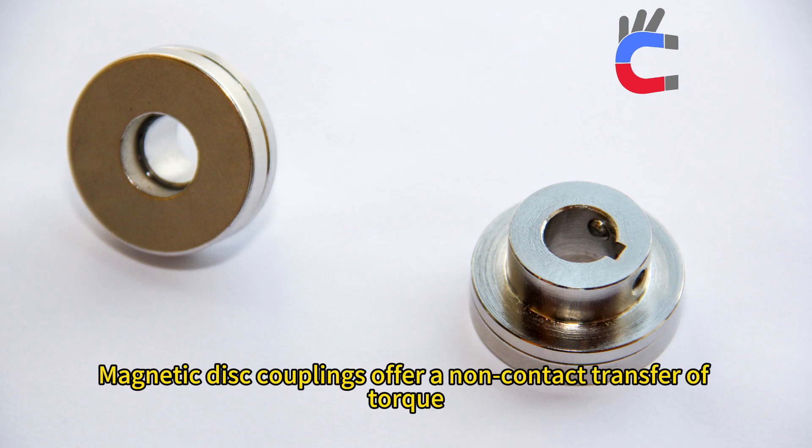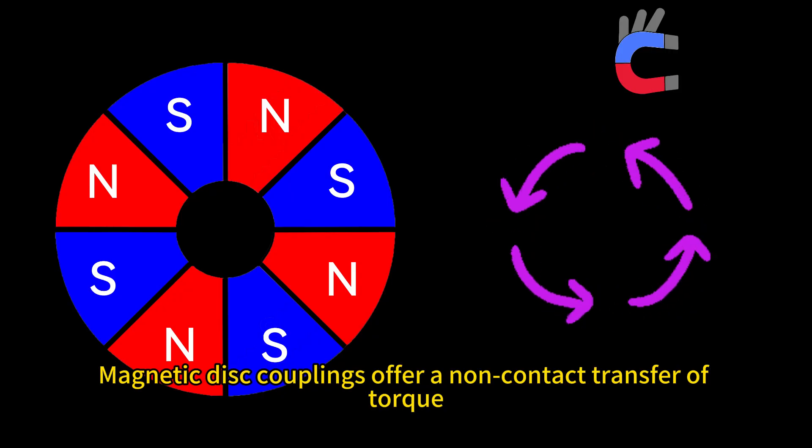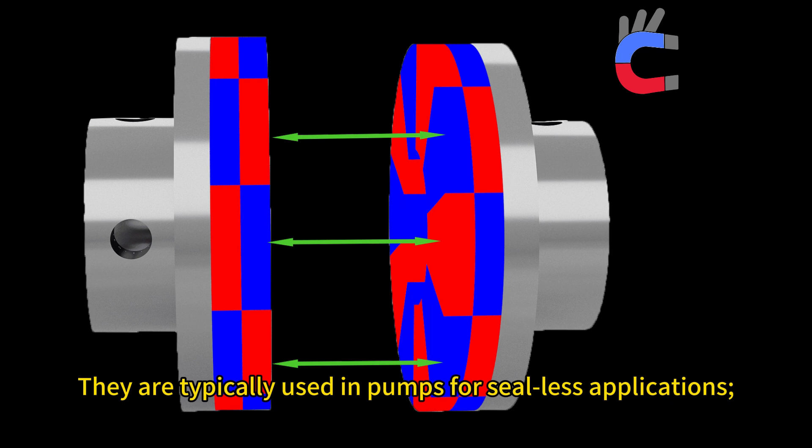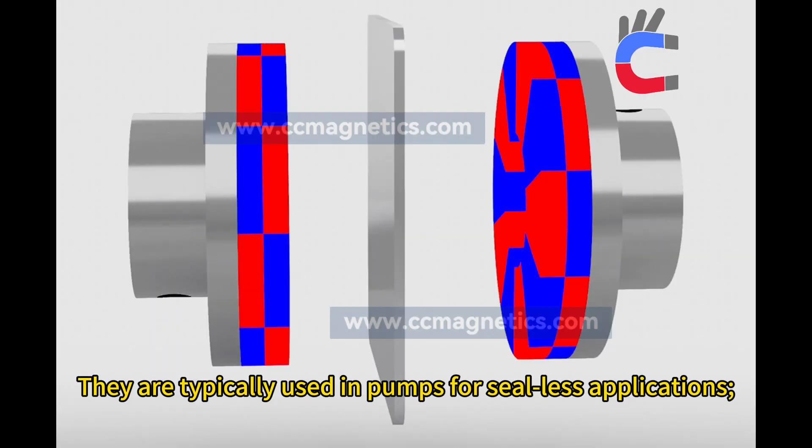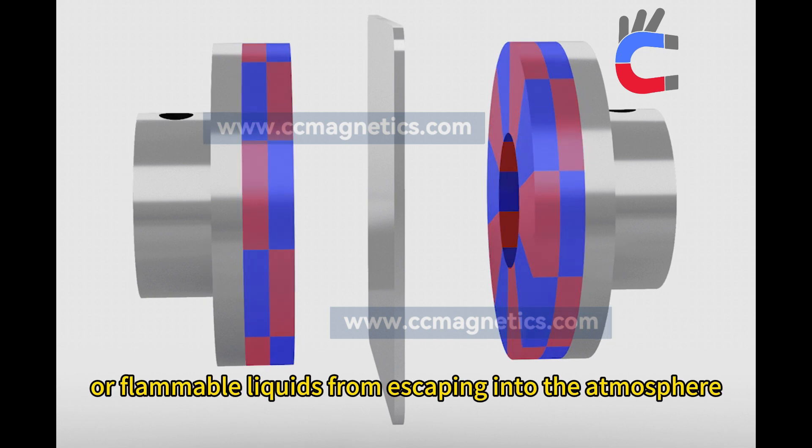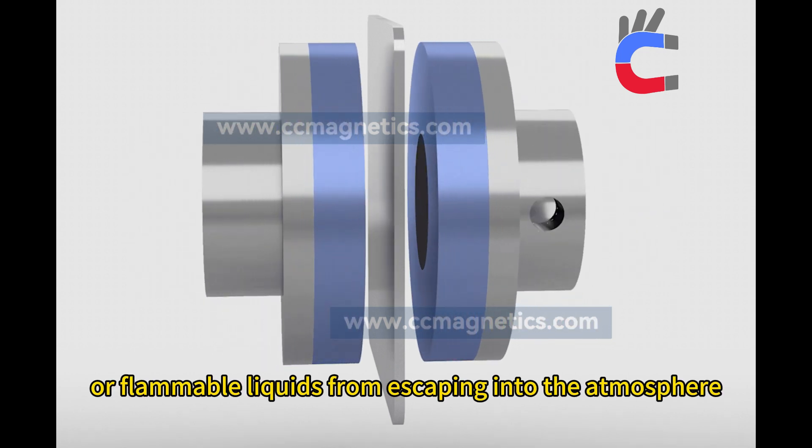Magnetic disc couplings offer a non-contact transfer of torque. They are typically used in pumps for seal-less applications, keeping corrosive, toxic, or flammable liquids from escaping into the atmosphere.